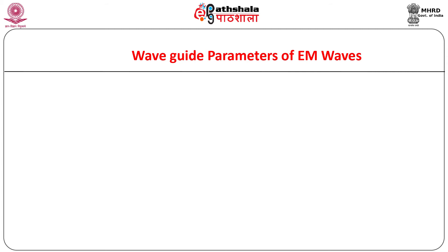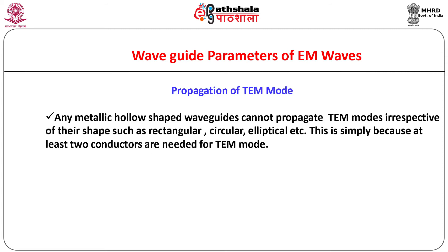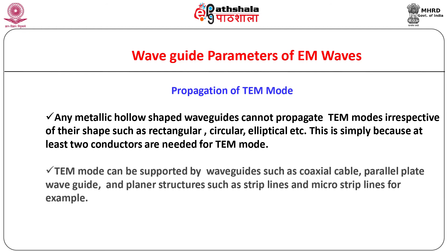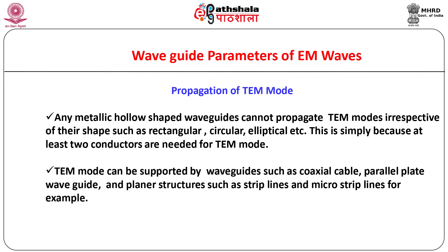Can any mode of propagation pass through any type of waveguide? No, it is not the case. Any metallic hollow-shaped waveguide cannot propagate TEM modes, irrespective of their shape such as rectangular, circular, or elliptical. This is simply because at least two conductors are needed for a TEM mode. TEM mode can be supported by waveguides such as a coaxial cable, parallel plate waveguide, and planar structures such as striplines and microstriplines.